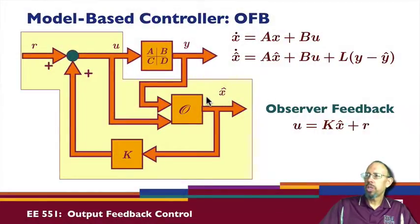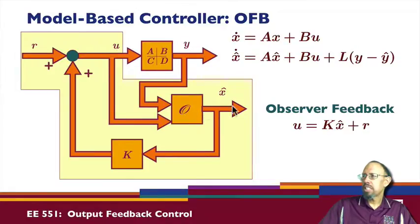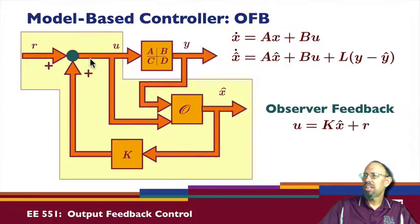Our observer takes two inputs: the output of the system and the control signal. Its output is the estimate of the state. We use that estimate of the state in state feedback and feed it back to form our control signal. So there's a loop on the inside — here's our state, here's our estimator, and here's our observer feedback.